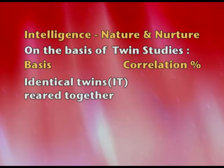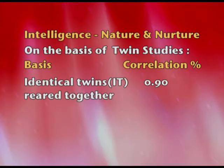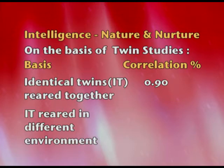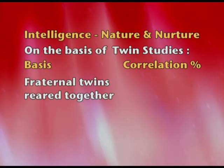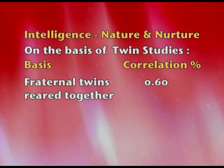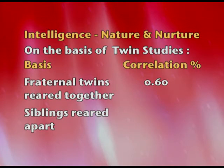Looking at the data for nature: identical twins born from the same fertilized ovum, when reared together, show a 90% correlation in intelligence. Identical twins reared in different environments — raised by adoptive parents in different families — show a 72% correlation. Fraternal twins, born from different fertilized ova but at the same time, when brought up together, show a 60% correlation. Siblings reared apart show a correlation of only 25%.